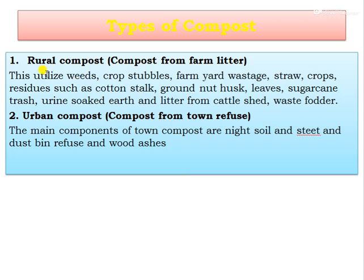The types of compost: the first one is rural compost, that is compost from farm litter. This utilizes weeds, stubbles, crop stalks, farm wastage, straw crop residues such as cotton stalks, groundnut husks, leaves, sugarcane trash, urine-soaked earth and litter from the cattle shed and waste water. The second one is urban compost, that is compost from town refuse. The main components of town compost are night soil, street sweepings, dust, refuse, and wood waste.